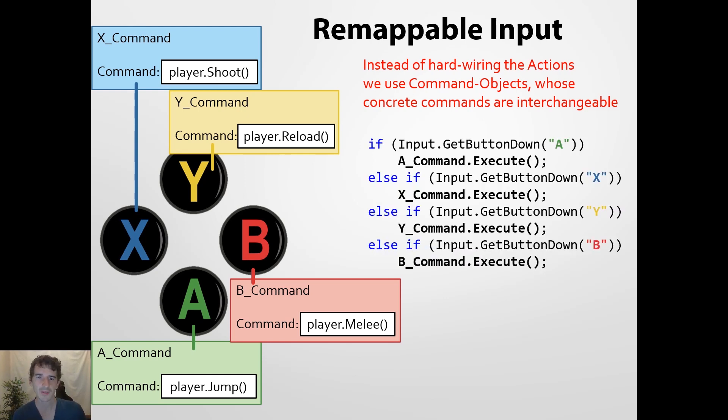In the code, it would look something like this. And the important thing you need to know here is that A command, X command, Y command and B command are just instance variables of the type command.